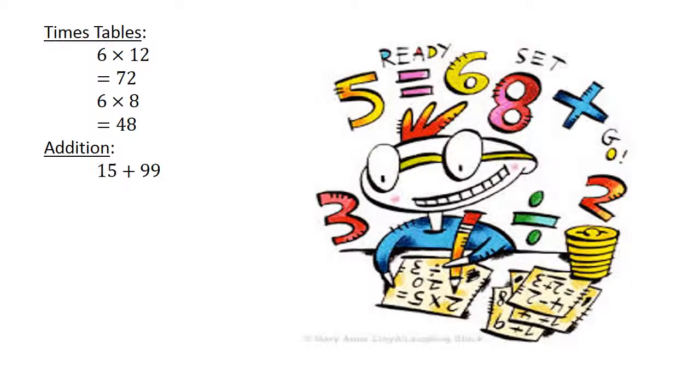Addition. 15 plus 99 equals 114. Subtraction. 16 minus 17 equals negative 1. Division. 54 divided by 9 equals 6.